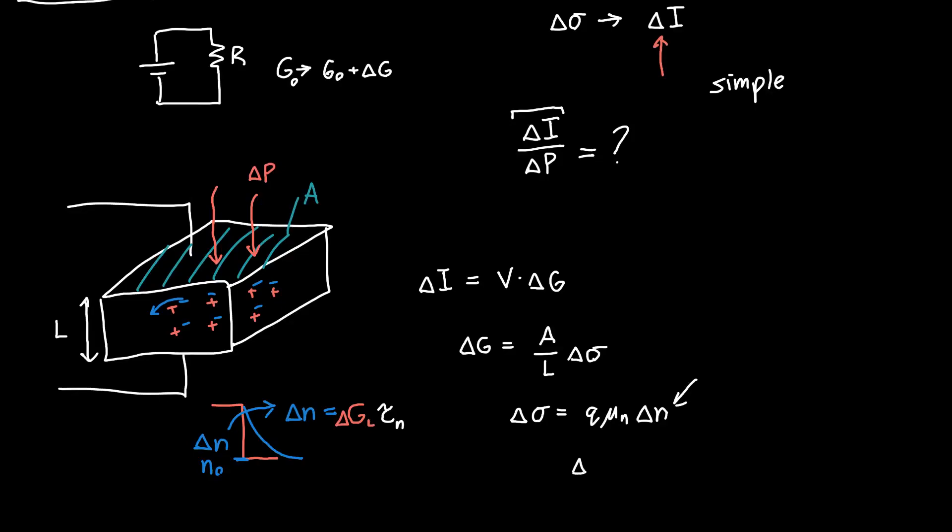So now we're one step closer. Delta n we know now is just equal to tau_n times this term delta G_L, or the generation rate in this volume. This generation rate G_L is just the number of electron-hole pairs generated per volume per unit time.